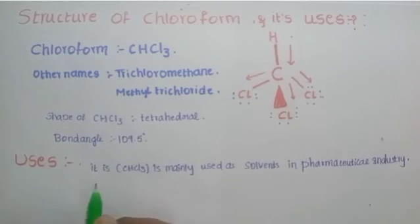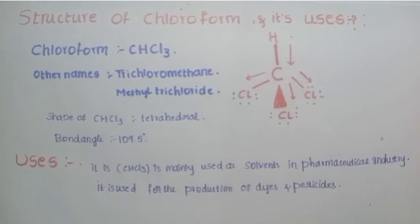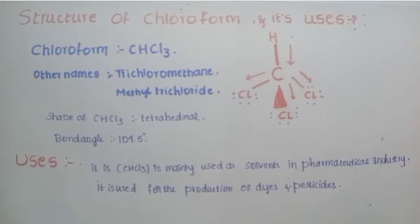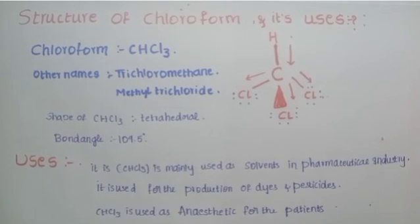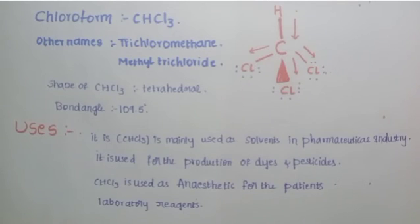Chloroform is used for the production of dyes and pesticides. Another important use is as an anesthetic — it is used for anesthesia in patients. It is also used as a laboratory reagent.